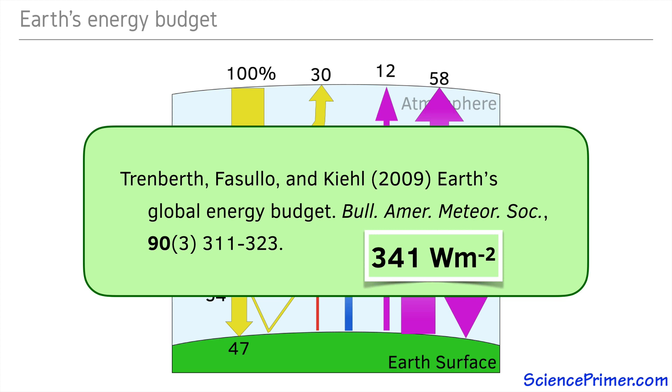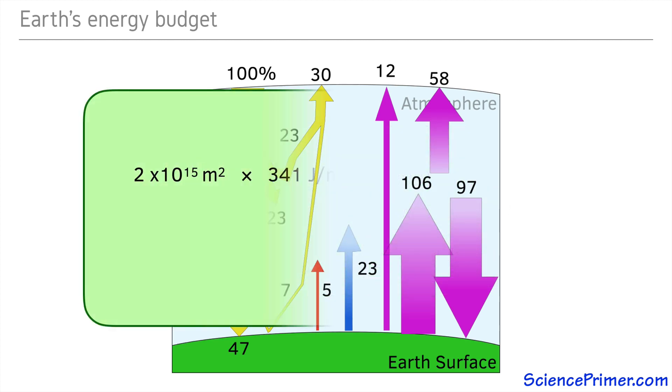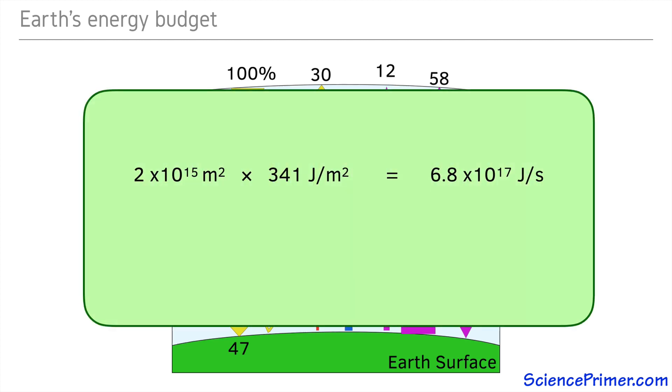Given the surface area of the outer atmosphere, this means there are about 6.8 times 10 to the 17 joules hitting the planet every second. That is a 68 followed by 16 zeros.